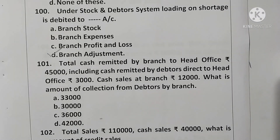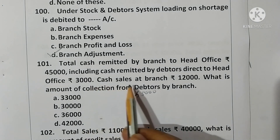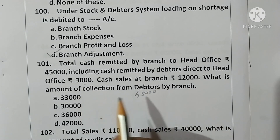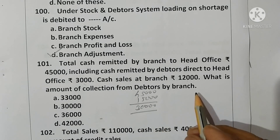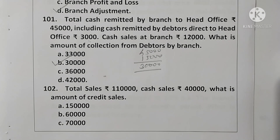Question 101: Total cash remitted by branch to head office is rupees 45,000, including cash remitted by debtors directly to head office rupees 3,000, and cash sales rupees 12,000. Collection from debtors by branch: subtract 12,000 cash sales and 3,000 direct remittance from 45,000; that is 45,000 minus 15,000 equals rupees 30,000. Option B is correct.